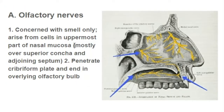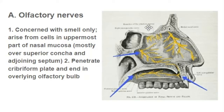The olfactory nerves are concerned with the perception of smell. They arise from cells in the uppermost part of the nasal mucosa — the olfactory epithelium at the top of each nasal cavity. Bundles of axons pass upward, perforate the cribriform plate, and synapse with neurons in the olfactory bulb, providing the perception of smell.